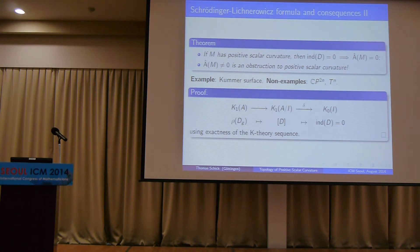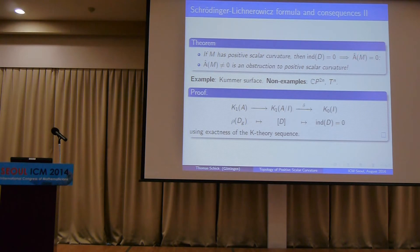An example where the obstruction works is the Kummer surface — a real four-dimensional complex two-dimensional Calabi-Yau variety with non-zero Â-genus that is spin, so it cannot have positive scalar curvature. Non-examples include the tori, which have Â = 0 — they don't have positive scalar curvature either, but that's not visible with this method. Also non-examples are the CP²ⁿ manifolds, because they are not spin manifolds; their Â is non-zero but since they're not spin, the argument doesn't apply — which is fortunate, since they do have positive scalar curvature metrics.